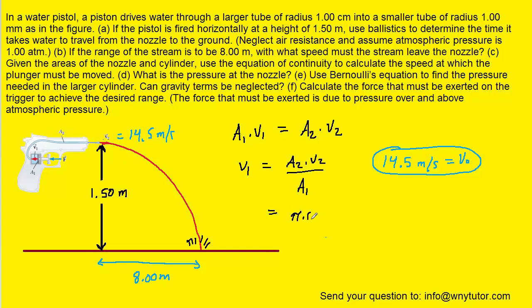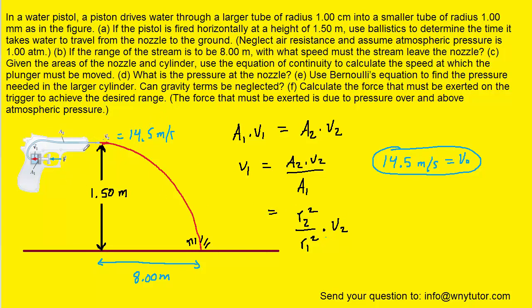A2 is pi times radius 2 squared, and A1 is pi times radius 1 squared, multiplied by V2. The pi's cancel, simplifying the equation. V2 is 14.5 meters per second, and radius 2 is the radius of the nozzle — 1 millimeter, carefully converted to 1 times 10 to the minus 3 meters, which we then square.